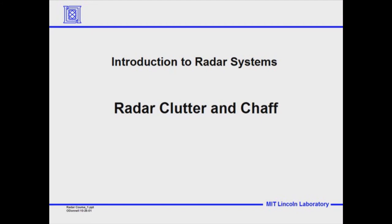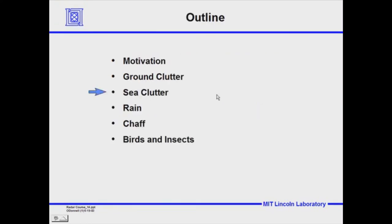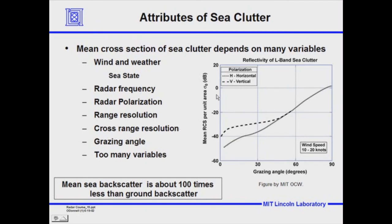Now we're starting Part 2 of Lecture 7 — Radar Clutter and Chaff. Let's move on to sea clutter. Sea clutter is very different than ground clutter. The first point is it's a lot less intense — about a hundred times less intense than ground backscatter. That's the good news. The bad news is that the ocean moves. The ocean moves with the wind, so you're going to have a motion of the backscatter because a lot of what you're reflecting off of are waves. The waves will move at 10, 15, 20, or 30 knots.